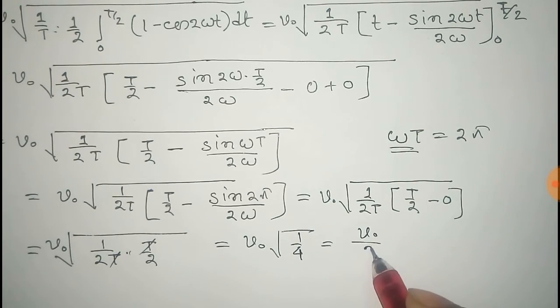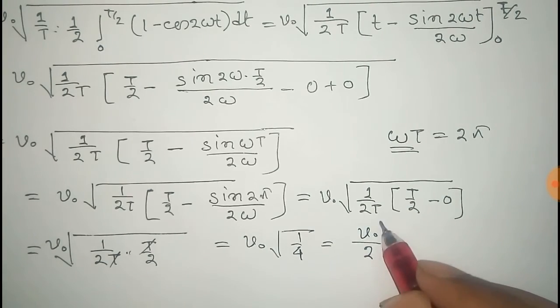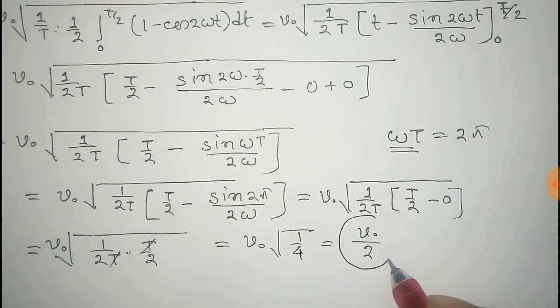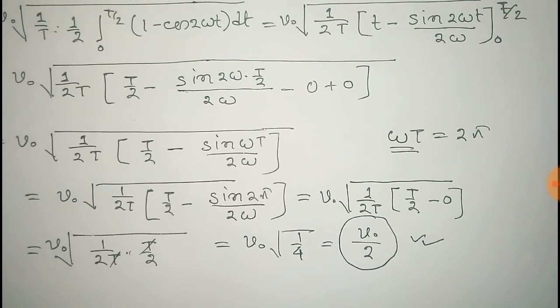Thus we get V_RMS = V₀/2 as the RMS value of the half-wave rectifier, where V₀ is the peak voltage.